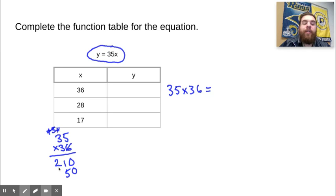3 times 3 is 9, plus 1 is 10. 0 plus 0 is 0, 1 plus 5 is 6, 2 plus 0 is 2, and 1 plus nothing is 1. We have 1,260. Now let's go ahead and solve it for where X is 28. Come back whenever you're finished.